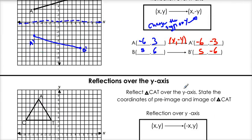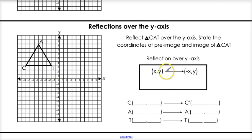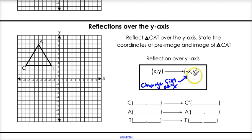Now let's move on to a reflection over the y-axis. We want to reflect triangle CAT over the y-axis and state the coordinates of the pre-image and the image of CAT. The rule for reflecting over the y-axis is: given a coordinate (x, y), you take your x value and change the sign, giving you (negative x, y). Change the sign of x, and the y stays the same.